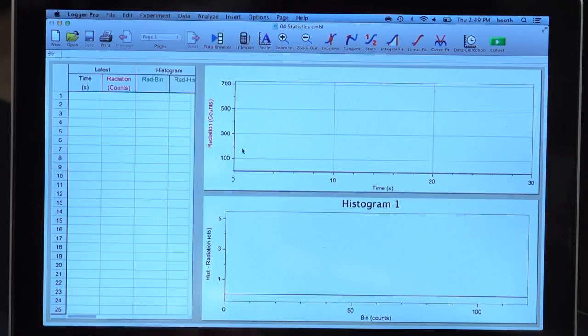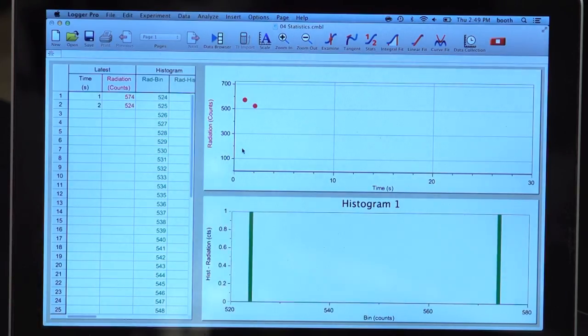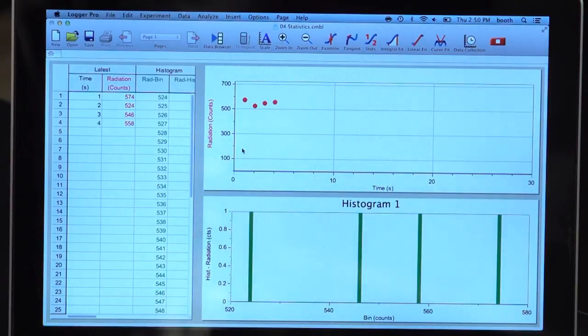The first thing that I need to do to conduct this experiment is to find a time interval in which I get, on average, only about one or two counts. To set that time interval, I need to measure the average rate of my radioactive source. So I'm going to put that right next to the radiation monitor. And this file is set up to take data once every second.